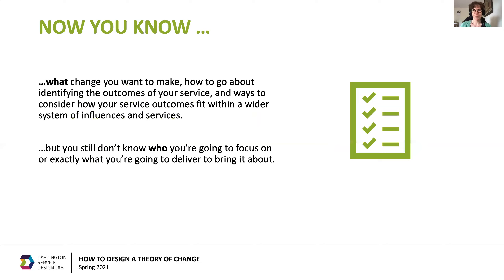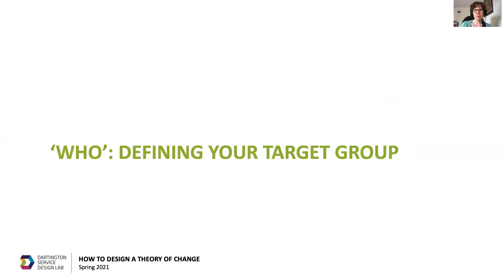Now you know what changes you want to make and how to identify the outcomes of the service and the ways to consider how your service outcomes fit within the wider system of influencing services. But we still haven't thought about who we're going to focus on, or exactly who you're going to deliver this to to bring the change about. Let's consider this now as defining your target group.